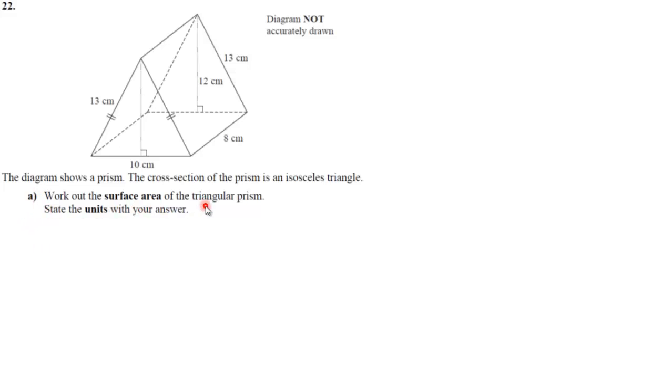Part A says work out the surface area of the triangular prism. State the units of your answer. Remember the units are going to be centimeters squared because they are all centimeters and it is an area. You get a mark for that no matter what your number part is. You want us to work out the surface area. Think about what the net of this shape is going to look like.